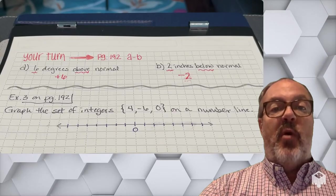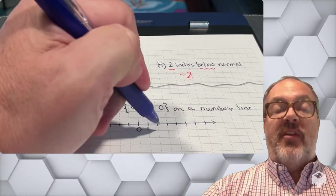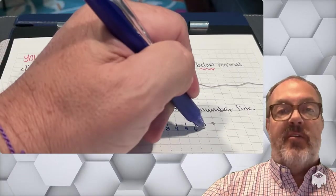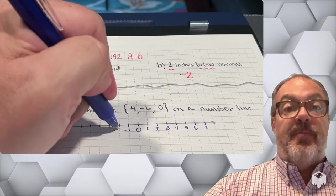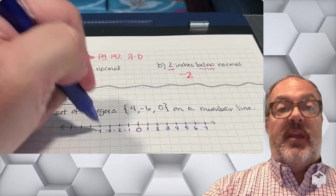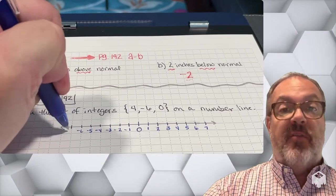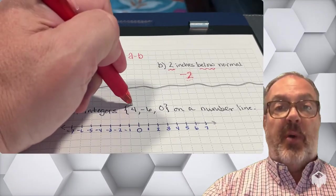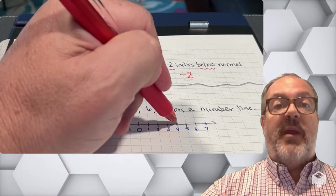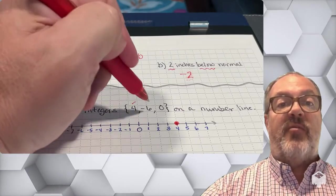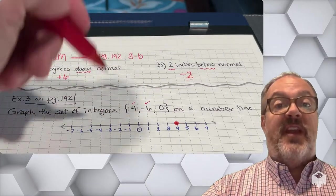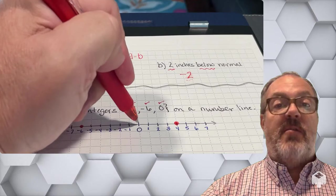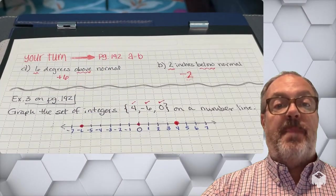All right, in example 3, we want to graph the set of integers on this number line. So I already have the number line drawn for you. I just don't have the values underneath each of the little tick marks. So I'm just going to write those in. And so you can see, to the right of 0 are going to be all of the positive numbers. To the left of the 0 are going to be the negative numbers. So I'm going to start out with positive 4, and I'm going to find where that goes on my number line. And I'm just going to put a little circle there, a little dot, just to indicate that that's where 4 is. Now I have negative 6. I'm going to look on the left side of 0 and put a dot at negative 6. And 0, I'm going to put a dot there.